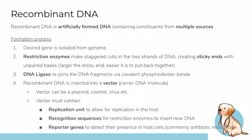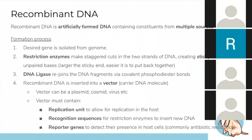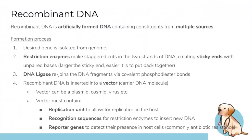Recombinant DNA is DNA that has been formed using multiple different kinds of sources. We get a particular gene we're interested in and extract it using restriction enzymes — think of those as molecular scissors. We cut it with sticky ends on the side, like Lego pieces that overlap and stick better. Then we put the gene into a vector and use DNA ligase to seal everything together.